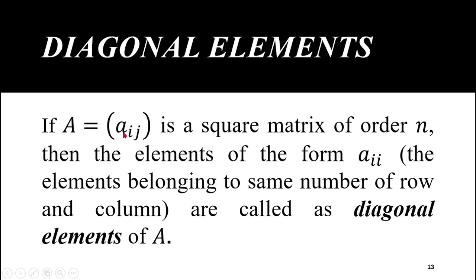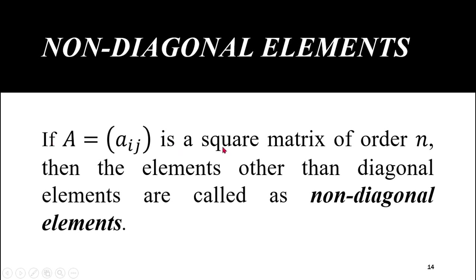Diagonal elements: if A = [a_ij] is a square matrix of order n, then the elements of the form a_ii — belonging to the ith row and ith column — are called diagonal elements of A. For example, first row first column, second row second column, third row third column, and so on. The elements other than diagonal elements are called non-diagonal elements, meaning elements belonging to different row and column numbers, for example belonging to the first row and second column, or second row and first column.